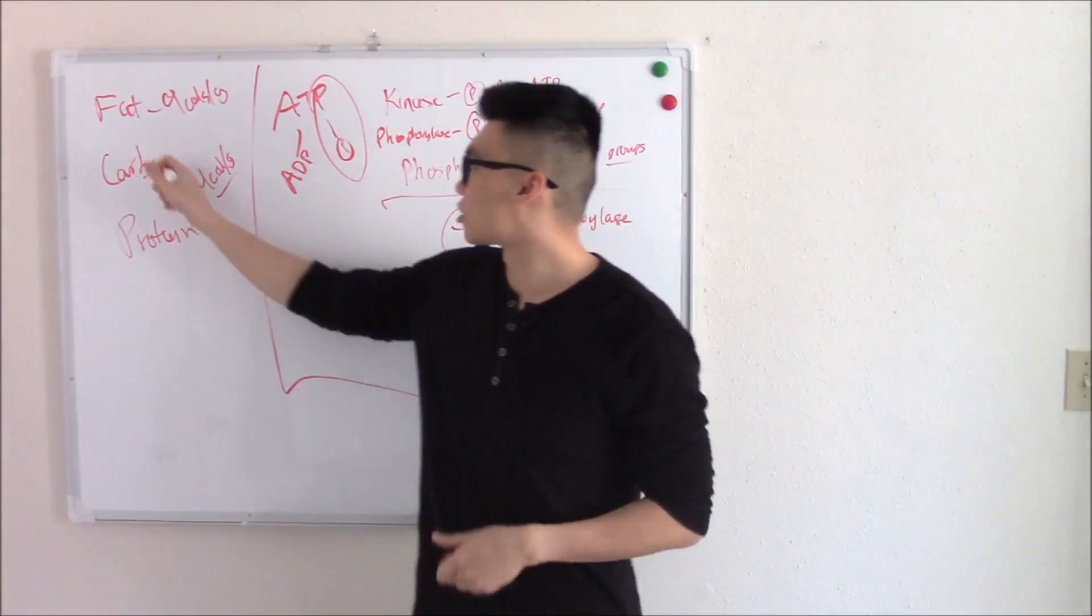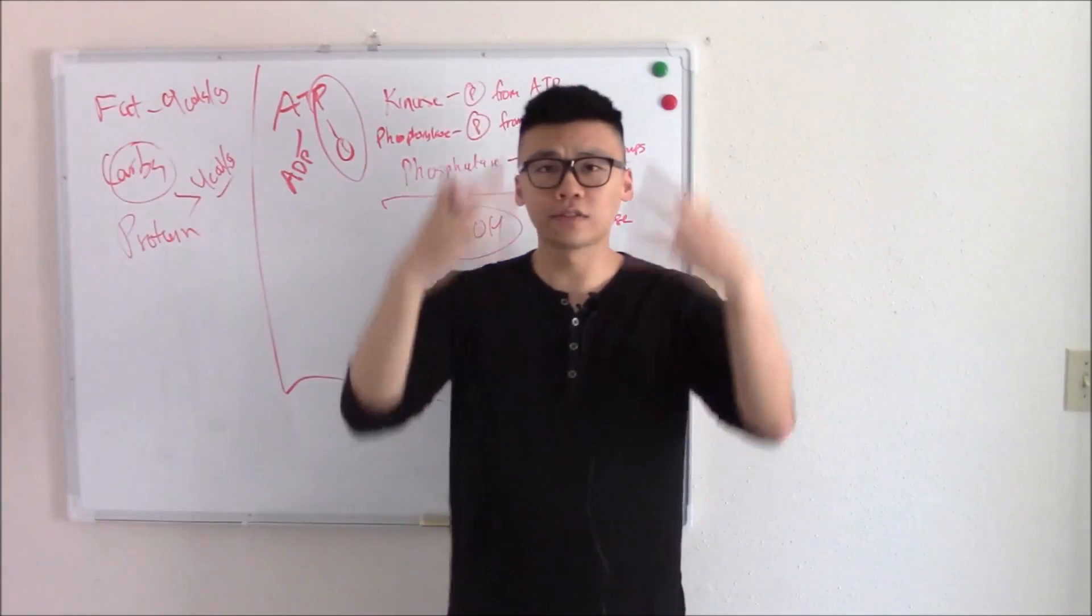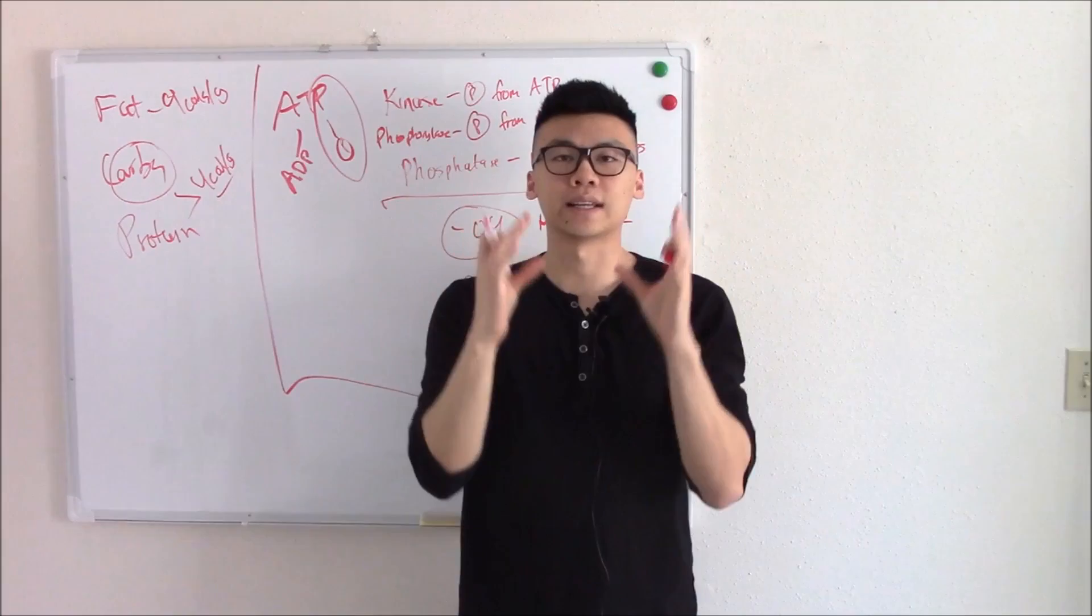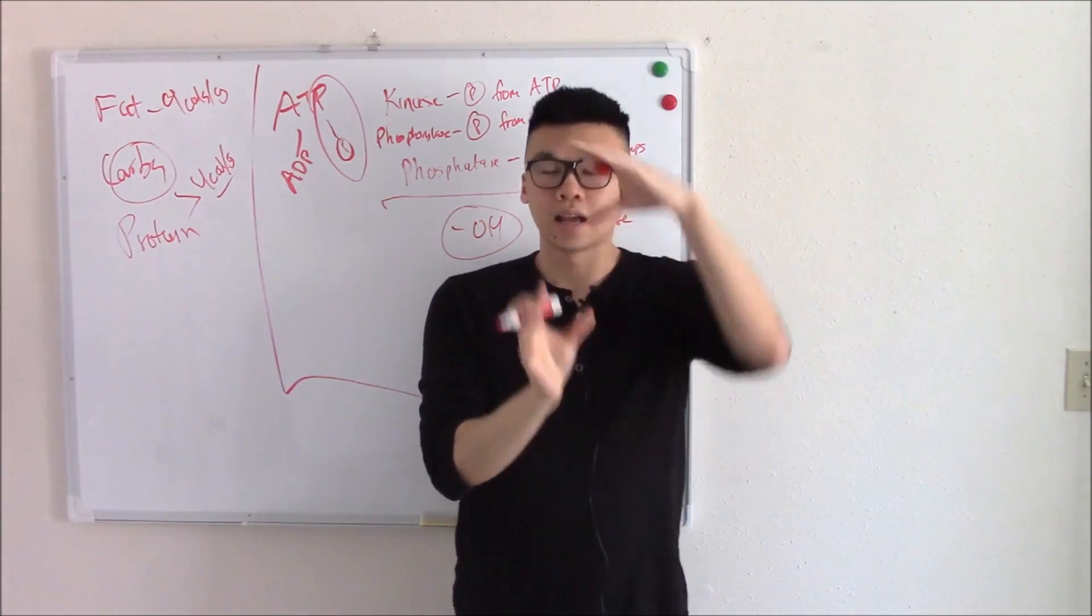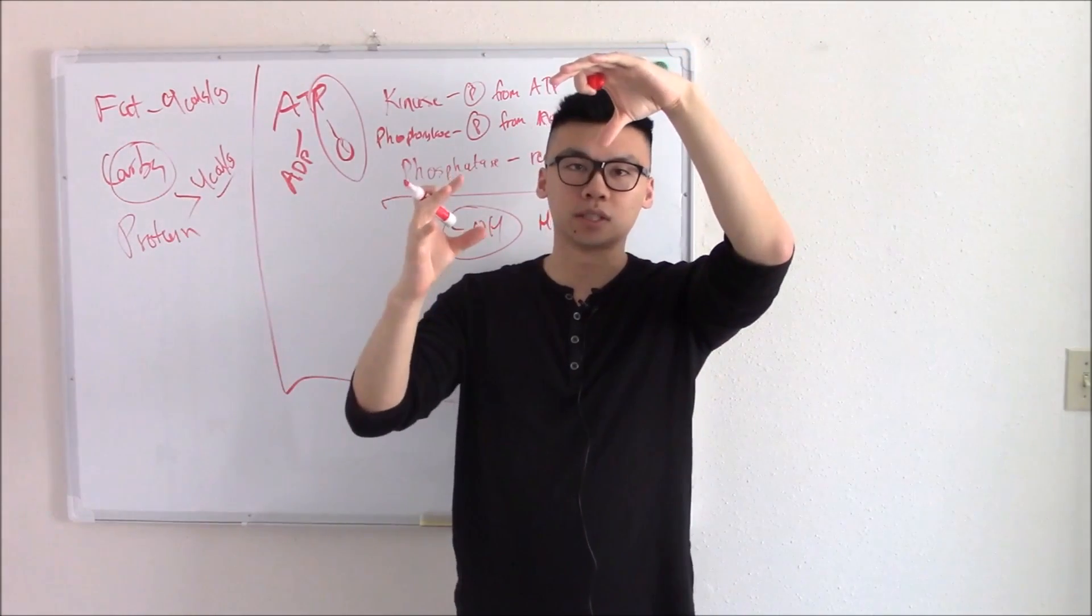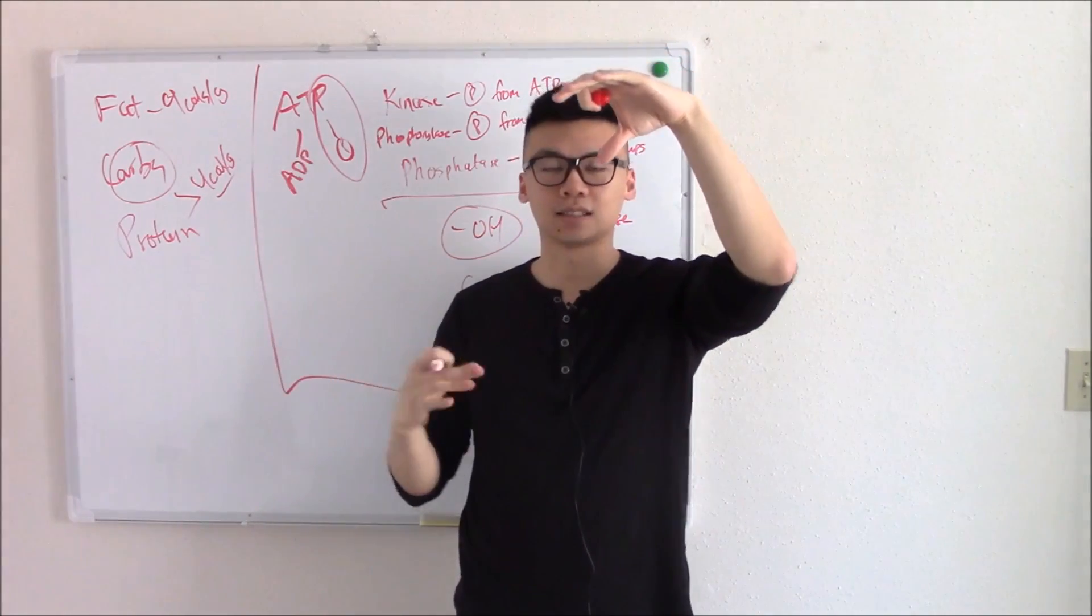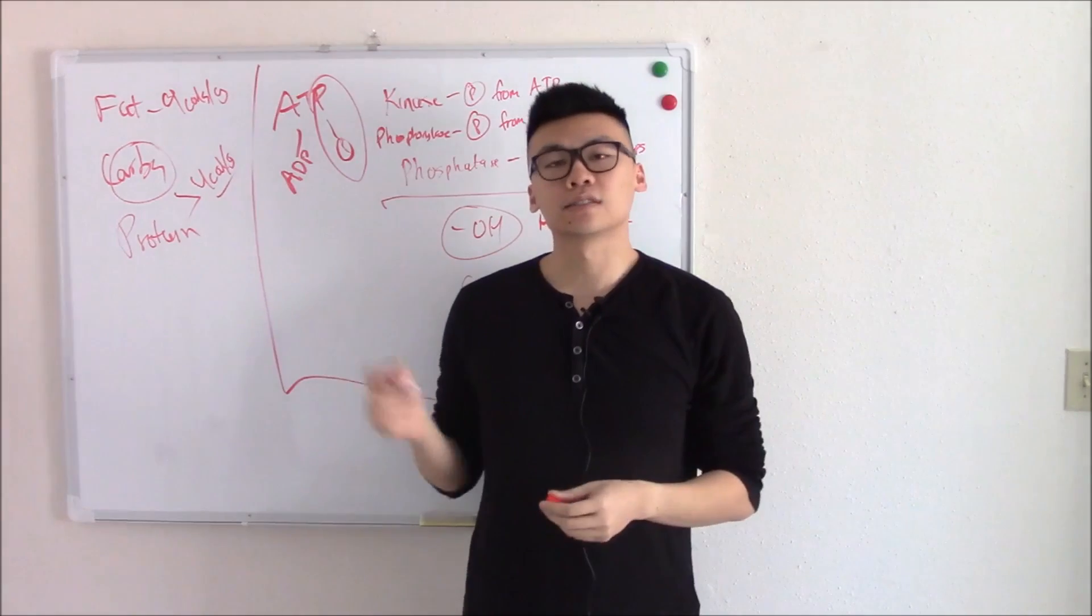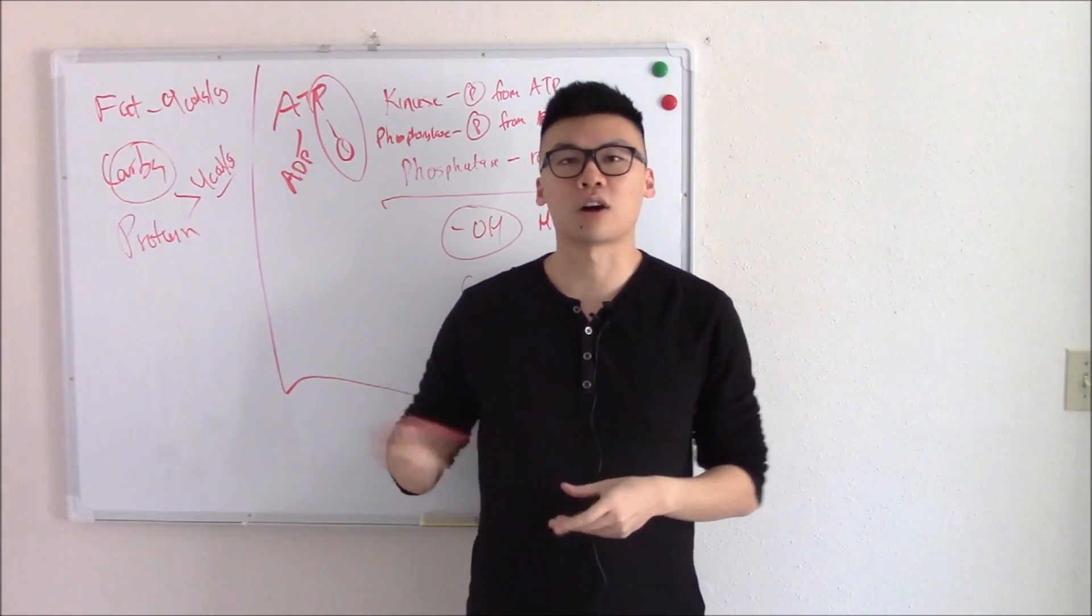So what we're going to do, we're going to start with carbs, we're going to find out just what happens when you break it down, we're going to follow it. And using that as a backbone, using that as kind of like our building block, we're going to add in protein, see how that fits. We're going to add in fats, see how that fits. So this does it for this video. Next video, we're going to talk all about carbohydrates.